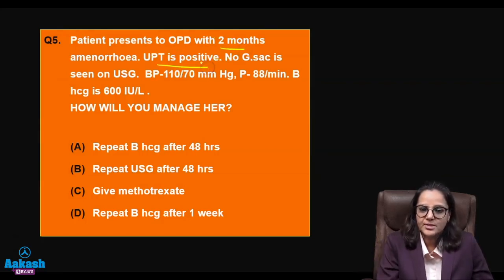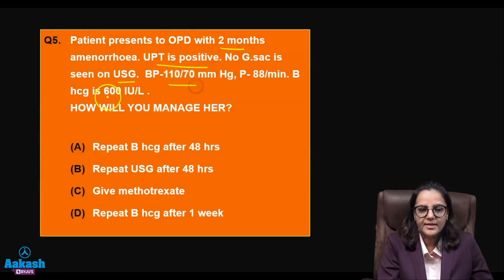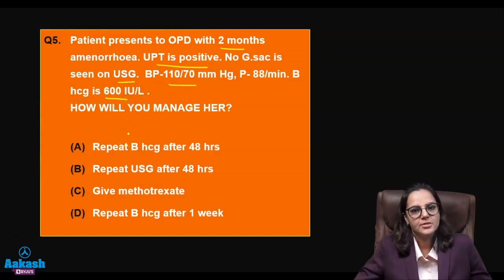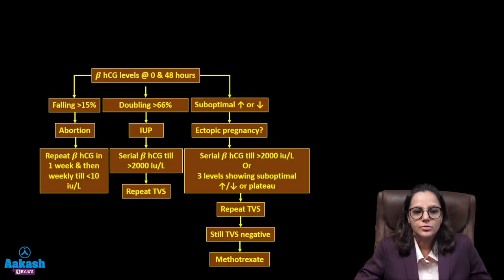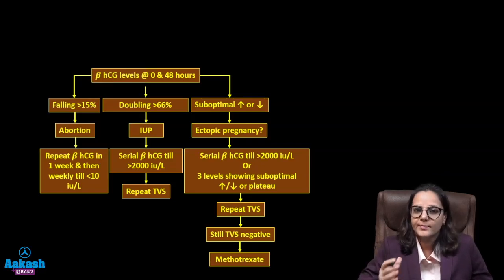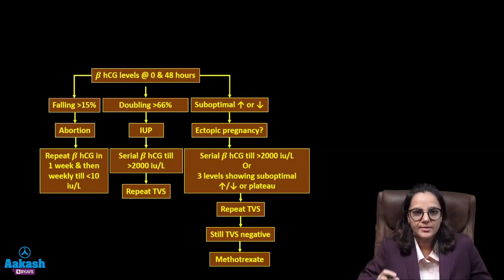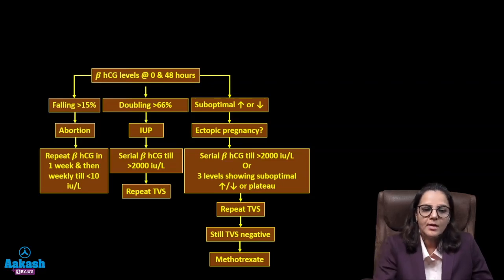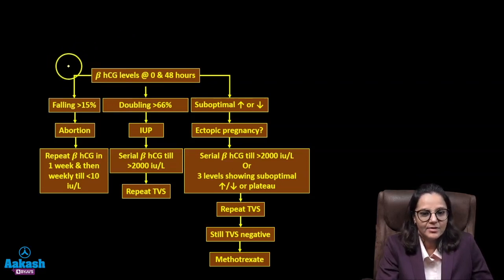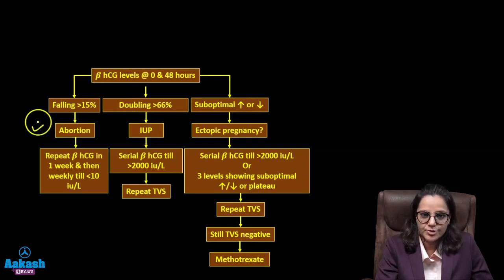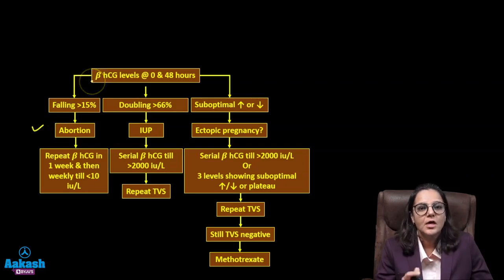Question five: a patient presents with two months of amenorrhea, positive UPT, no gestational sac on ultrasound, stable vitals, and beta-hCG of 600. How do you manage? Since beta-hCG doubles every 48 hours normally, repeat the serum beta-hCG after 48 hours. If the beta-hCG falls by more than 15% from baseline to Day 2, the likely cause is abortion or failing pregnancy; monitor with weekly serum beta-hCG until values fall below 10 IU/L.